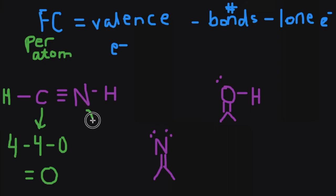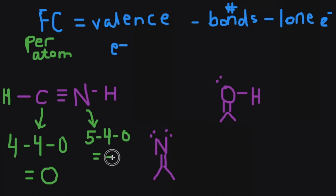Next, let's look at the formal charge of nitrogen. Nitrogen from the periodic table should have five valence electrons. Now we subtract the number of bonds that it's making — three bonds to carbon and one bond to hydrogen — minus the number of lone electrons that we see around it, which are none, which gives us a positive one. The formal charge on nitrogen should be a positive one, and we can just write positive.